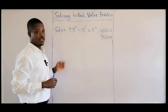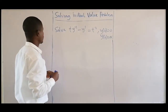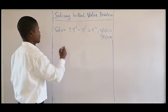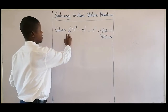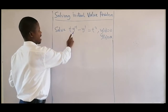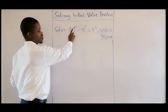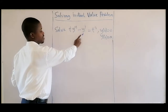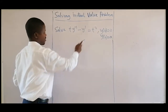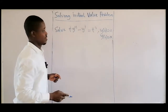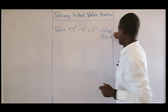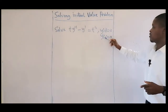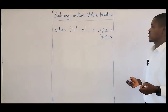We have another initial value problem. Solve: T times the second differential minus the fourth differential equals T squared. We have the initial value conditions: y of zero is zero, and y prime of zero is A.